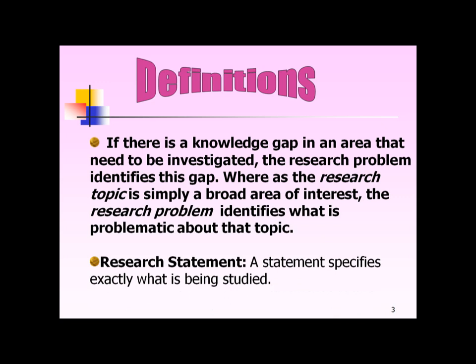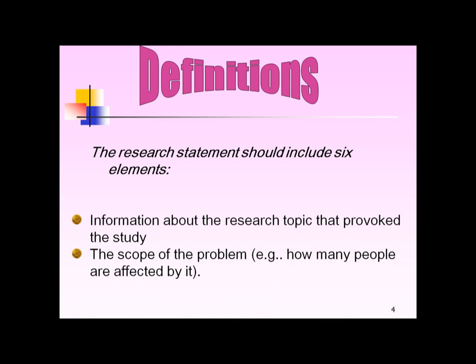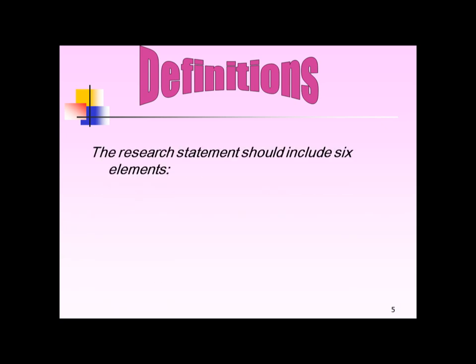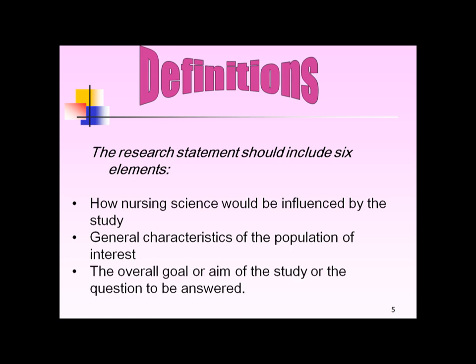Research statement — a statement that specifies exactly what is being studied. The research statement should include six elements: first, information about the research topic that provoked the study; second, the scope of the problem — for example, how many people are affected by it; third, why it is important to study the problem; fourth, how nursing science would be influenced by the study; fifth, general characteristics of the population of interest; and sixth, the overall goal or aim of the study or the question to be answered.